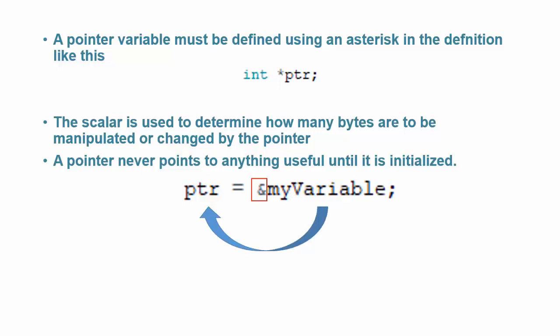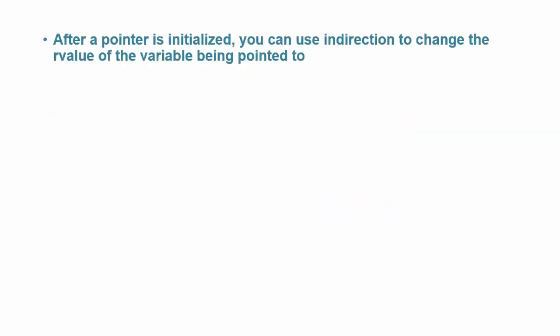After a pointer is initialized, you can use indirection to change the r value of the variable being pointed to. It can be done like this. Note that this asterisk sign is the indirection operator, which has the effect of assigning the value 10 into myVariable using the indirection operator and pointer variable ptr.